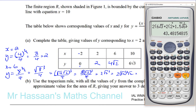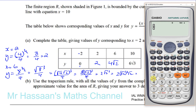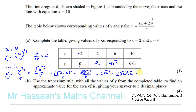We could have just used a calculator to verify — putting in the square root of 8 cubed divided by 4 confirms it gives 4 root 2, which is what we said. Now we have those values. We've got to use the trapezium rule with all the values of y from the completed table to find an approximate value for the area of R, giving the answer to 3 decimal places. The answer must be in surd form as shown.